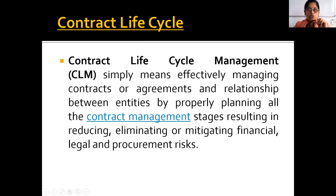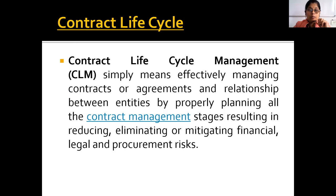Then, contract life cycle, also called CLM. Contract life cycle management is very much essential and necessary because without it we cannot properly manage the contract or the agreement between the two parties. At each stage we can clearly check and find out where the risk lies and reduce or eliminate that risk — whether it is financial risk, legal risk, or performance-related risk.